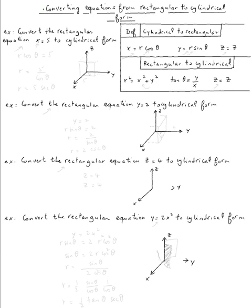The topic is converting equations from rectangular to cylindrical form. So let's do the first example. Convert the rectangular equation x equals five to cylindrical form. To convert from rectangular to cylindrical, we use these.